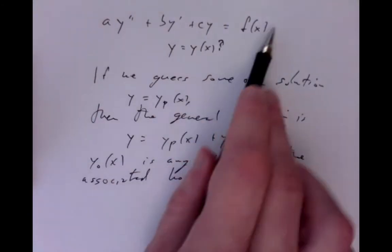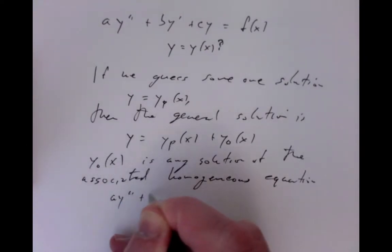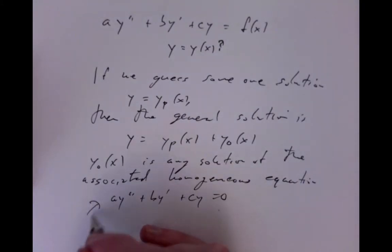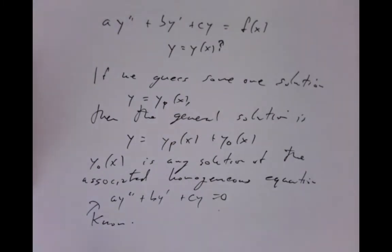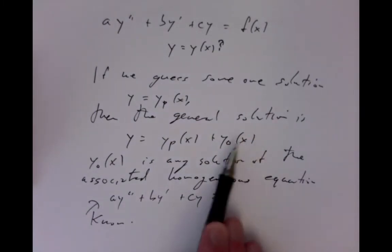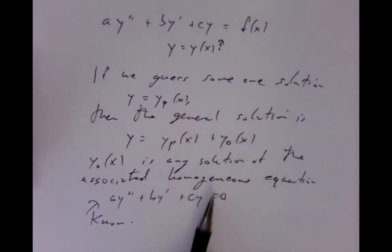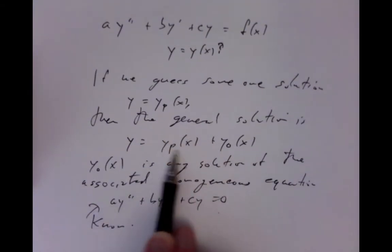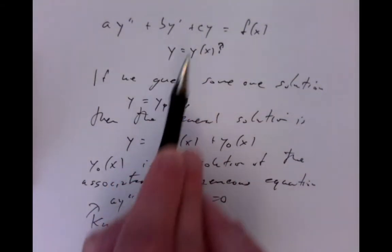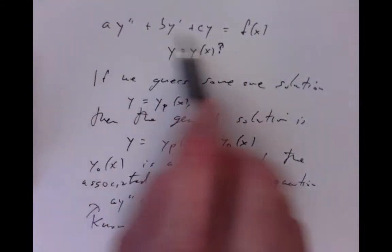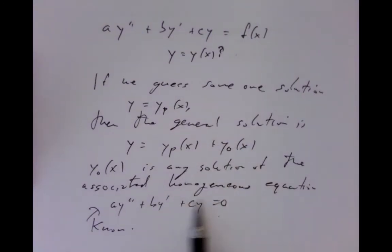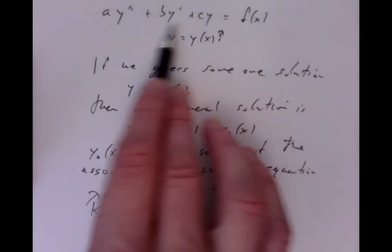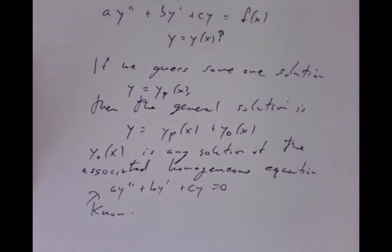The associated homogeneous equation is obtained by dropping off the inhomogeneity from the original equation, giving a constant coefficient equation we know how to solve. So we know how to find these y0s. We put solutions to the associated homogeneous together with the particular solution, and that gives every possible solution. All I need to do is guess one solution yp of x to the inhomogeneous equation; after that, solving the associated homogeneous gives every solution.